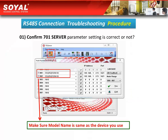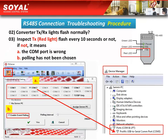If you find that your RS485 connection is unsuccessful, here are the solutions. First, go to confirm that the 701 server parameter settings are correct, and make sure that the model name you chose is correct. Second, observe the converter's TX or RX light to check whether it is flashing normally.